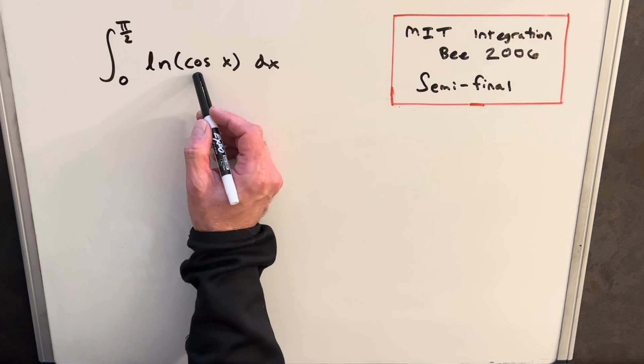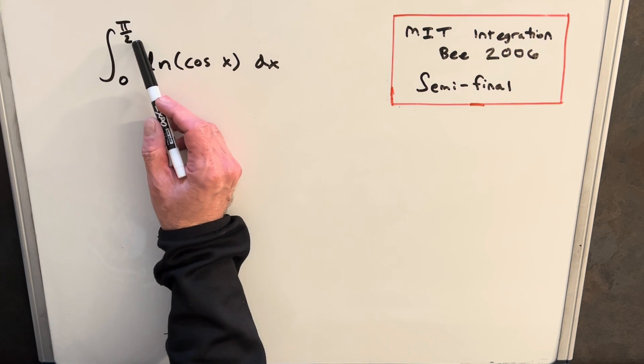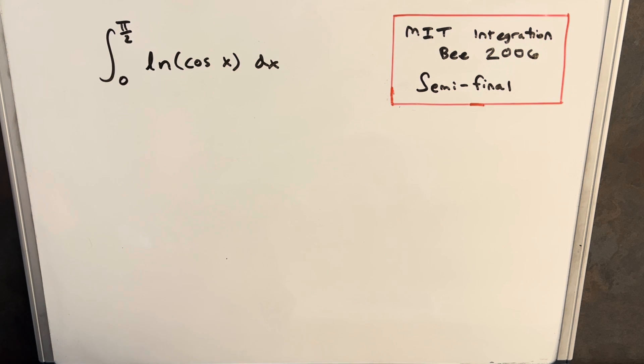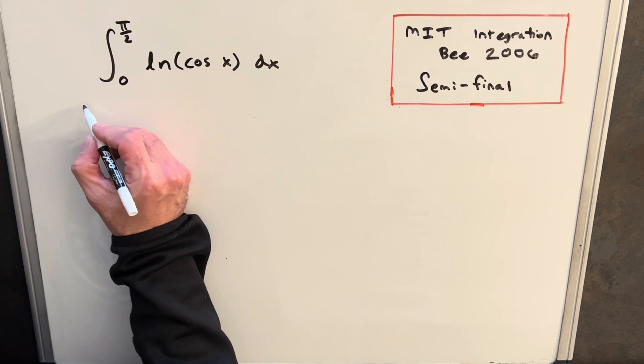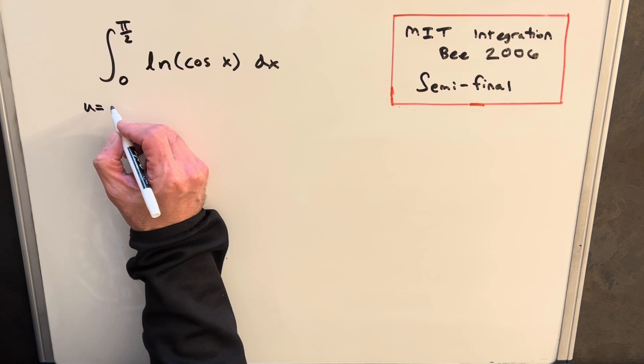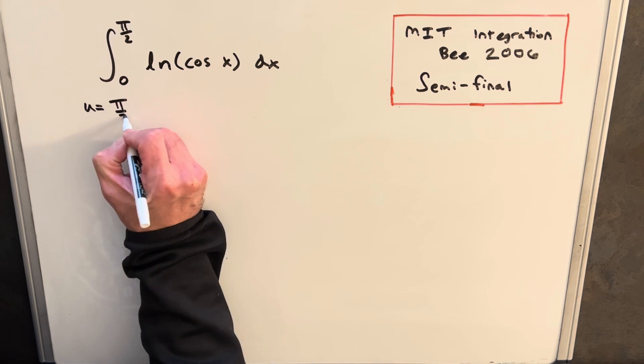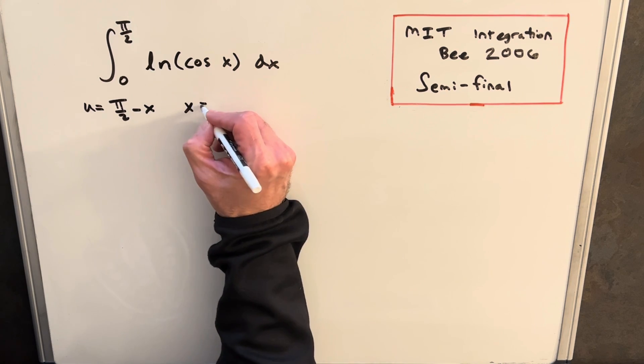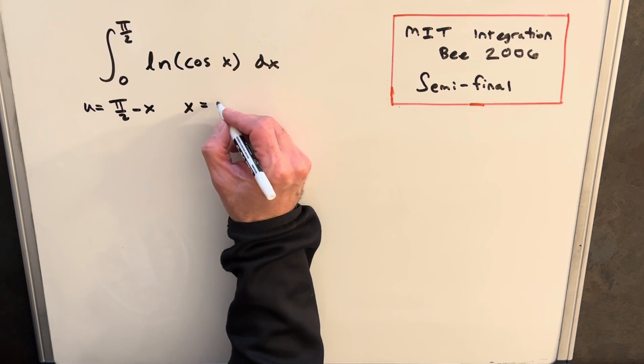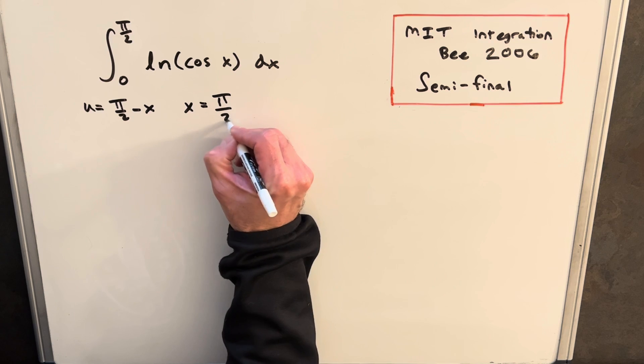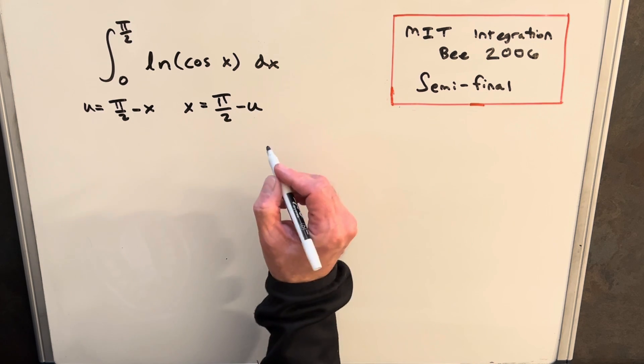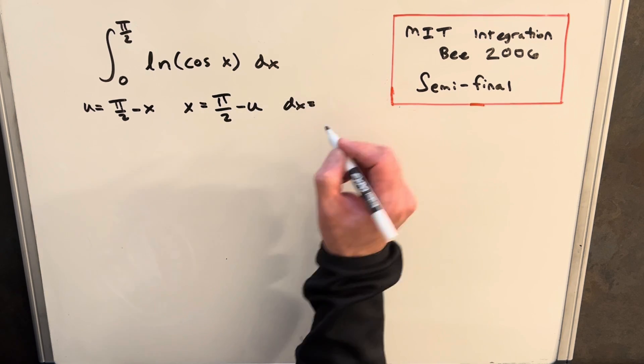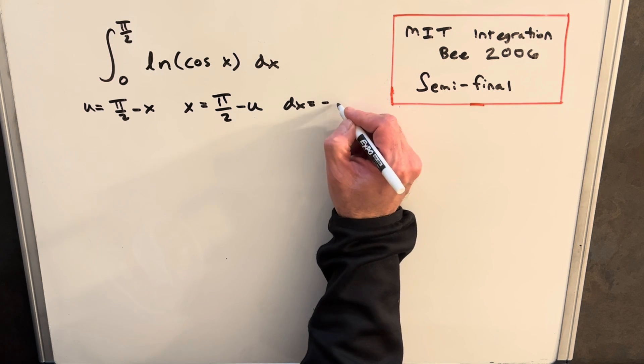Looking at this with the trig function with cosine in here, and also with the bounds being pi over 2 to 0, it makes me think that we could use a substitution and make use of the complementary angle formula. Our substitution is going to be u equals pi over 2 minus x, and then x equals pi over 2 minus u, and our dx is going to be minus du.